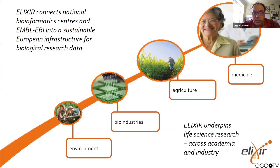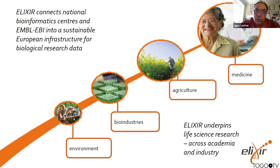So what's the idea of ELIXIR? The idea of ELIXIR is that it connects national bioinformatics scientific centres and institutes from across multiple countries and the EMBL-EBI into a sustainable European infrastructure for biological research data. This underpins life science research across academia and industry. It's not just about human data or sequence data — it's about all molecular data for human, agriculture, industry, and increasingly environment, including biodiversity.